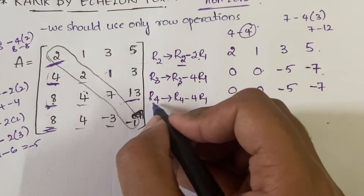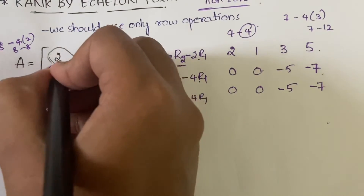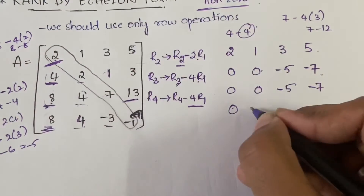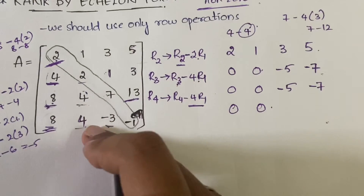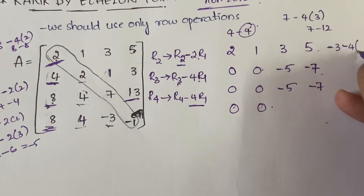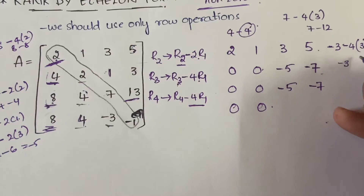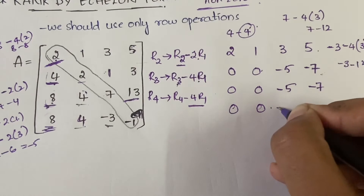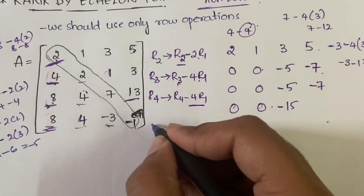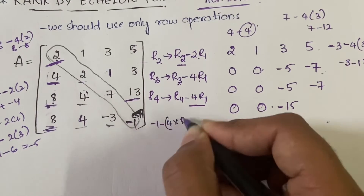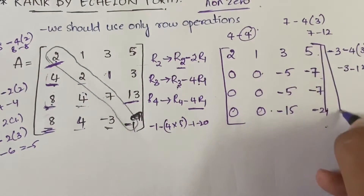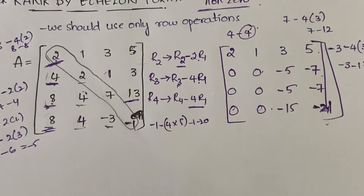For R4 (R4 minus 4*R1): 8 minus 4 into 2 = 0; 4 minus 4 into 1 = 0; minus 3 minus 4 into 3 = minus 3 minus 12 = minus 15; minus 1 minus 4 into 5 = minus 1 minus 20 = minus 21. So R4 is now [0, 0, minus 15, minus 21]. We now have our updated matrix after these three operations.